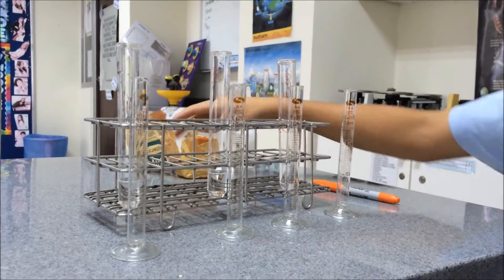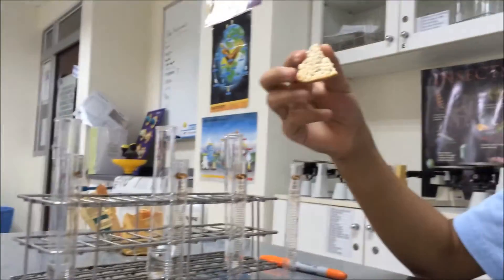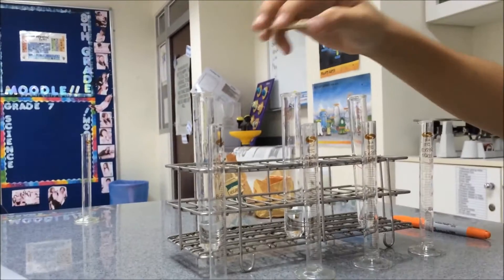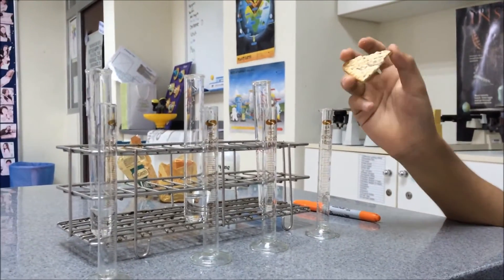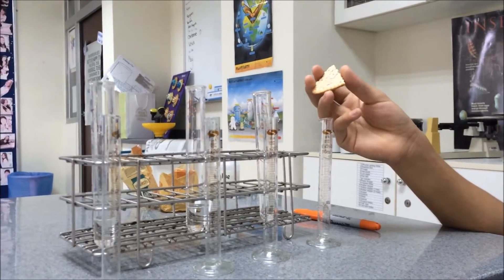In these three tubes, we're going to put biscuits into each of them. We're going to break it up and put it in each of the tubes, and we're going to see which one dissolves carbohydrates fastest.